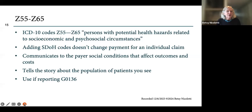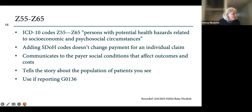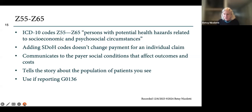Z55 to Z65 are defined as persons with potential health hazards related to socioeconomic and psychosocial circumstances. These codes won't change payment on an individual claim unless you're also using G0136, but they communicate to payers the social conditions that affect outcomes and costs. They tell the story about the population of patients you're seeing, so if you're part of an ACO or have any risk-based contracts, you want to use these codes.